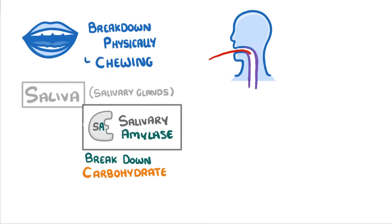Next, you swallow the food so that it can pass down your gullet, which is also known as your esophagus, and almost straight away it passes through to your stomach.